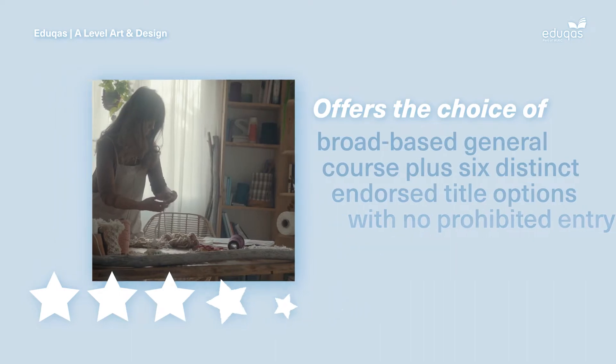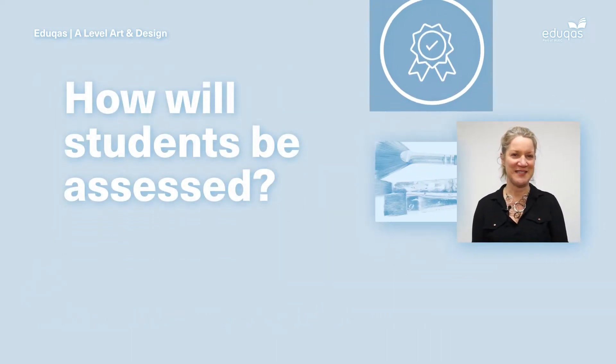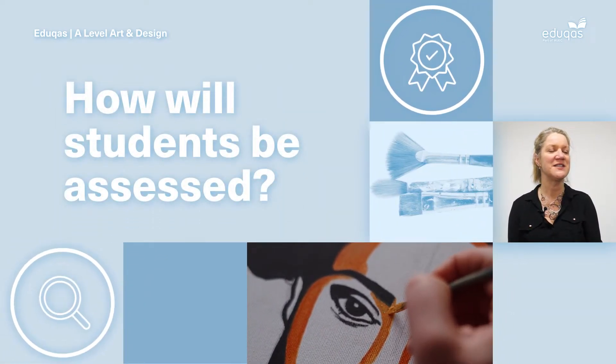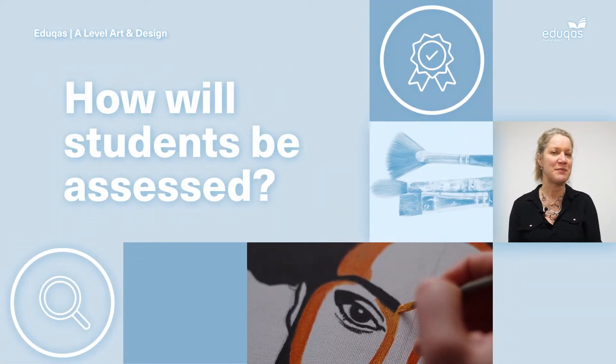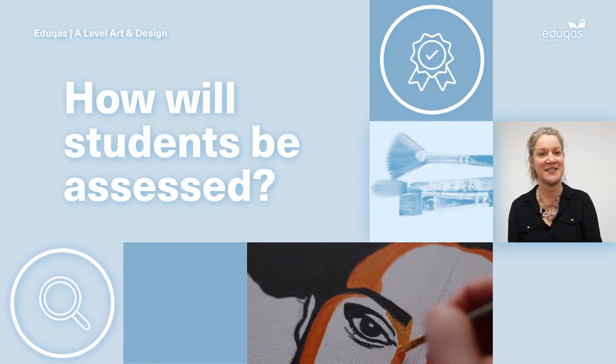How will my students be assessed? The A-level in art and design consists of a personal investigation and an externally set assignment. Our assessments have been designed to ensure they are clearly worded and accessible to all students.